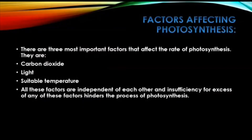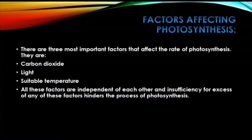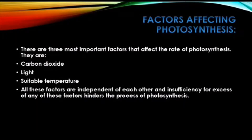A factor is something — it can be an environmental factor, biological factor, chemical factor — anything that affects the rate of any process or phenomena. In the case of photosynthesis, factors are those environmental factors that actually control the rate of photosynthesis. When I say control the rate, I mean they either decrease or increase the rate of photosynthesis. There are three most important factors.